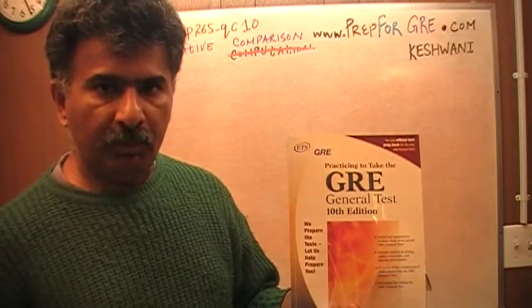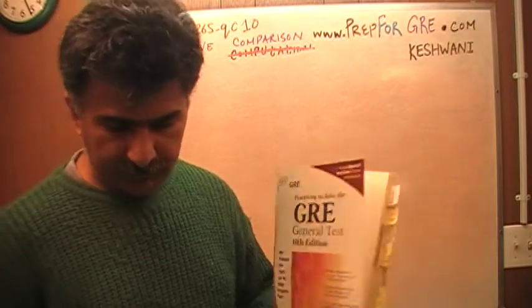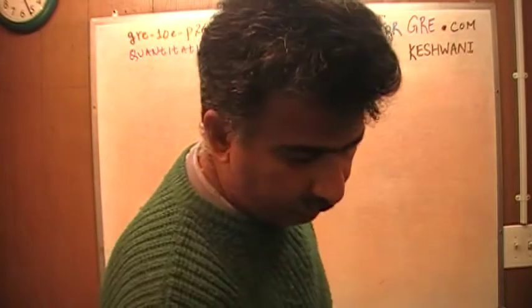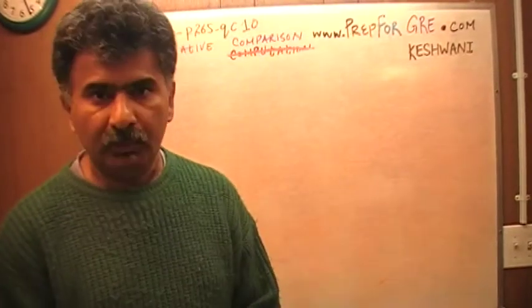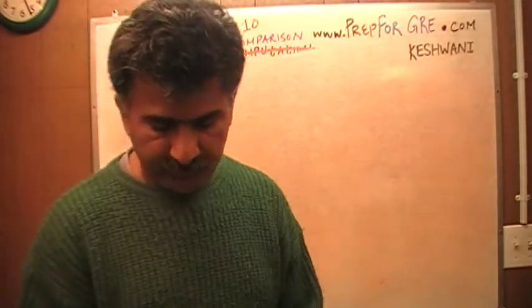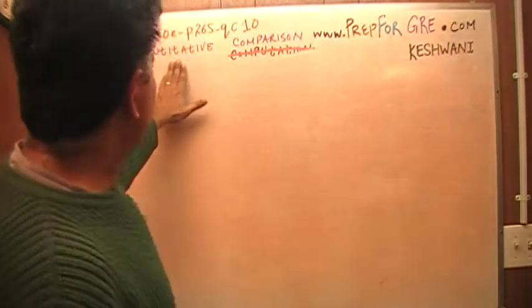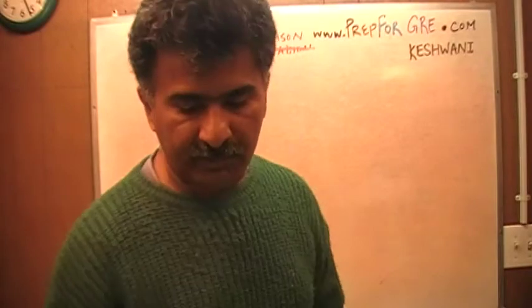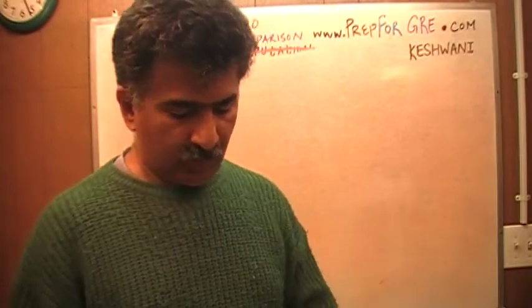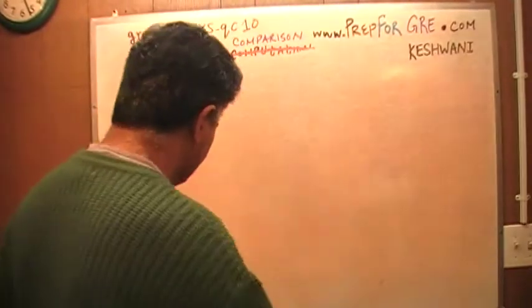If you do not own this book already, purchase one immediately. The problem that I am about to solve is the one you are going to find on page 265, the very last problem, problem number 10. These are called quantitative comparison questions. We are to compare the two quantities given in the two columns. Let's take a look at it.